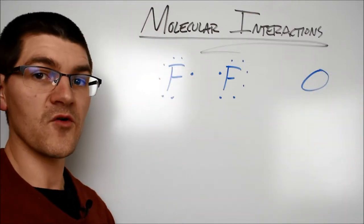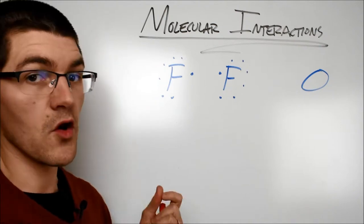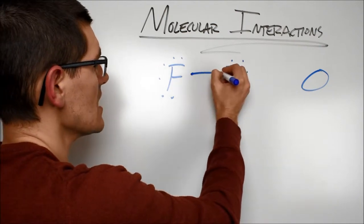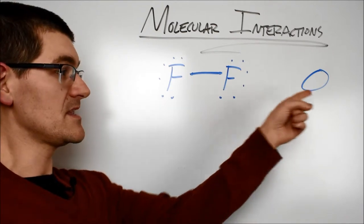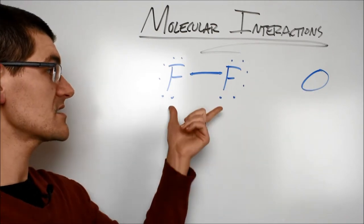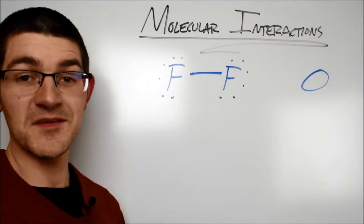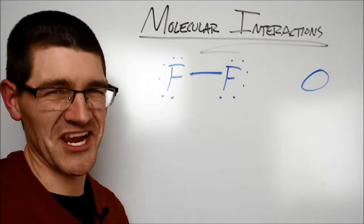So this is a very nonpolar covalent bond. Covalent meaning this electron is shared. And nonpolar meaning that it's shared equally. The zero difference here of electronegativities means both of my fluorines have the electrons 50% of the time. Perfect sharing.